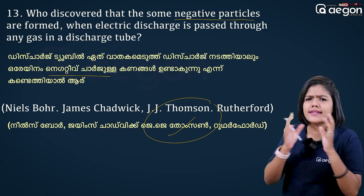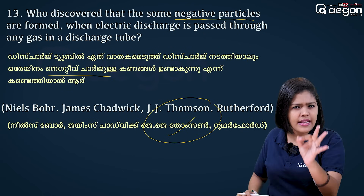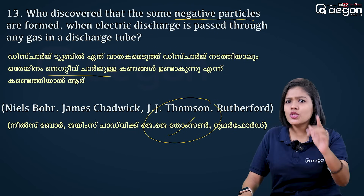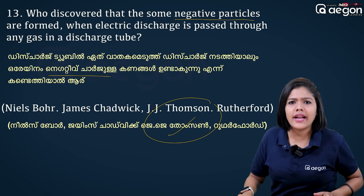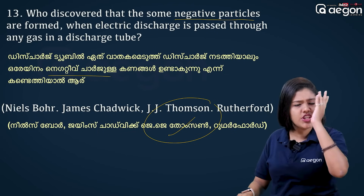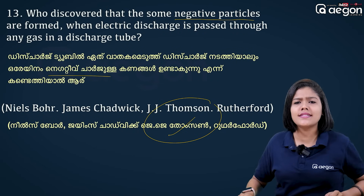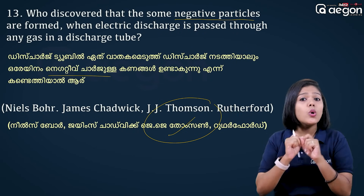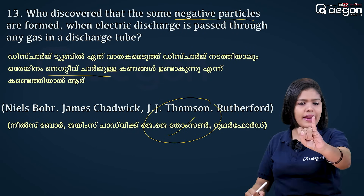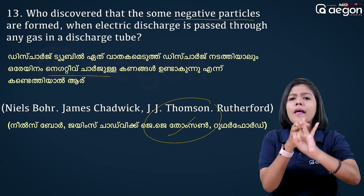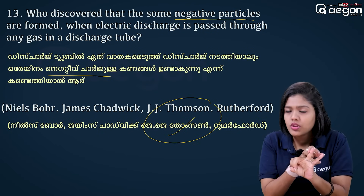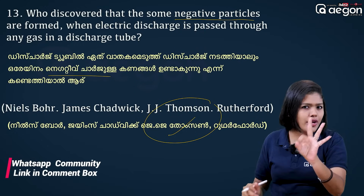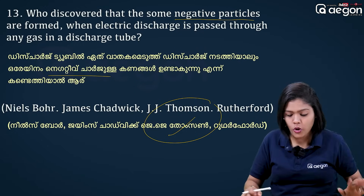J.J. Thomson discovered the electron (negative charge). The proton was discovered by Rutherford. The neutron was discovered by James Chadwick. These points about subatomic particle discovery are very important.